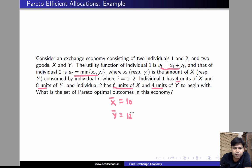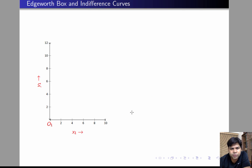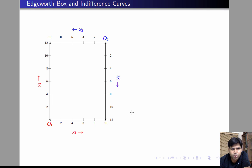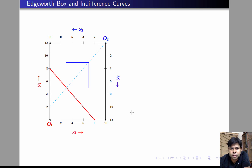Now let's find the set of all efficient allocations in this economy. We will begin by plotting the Edgeworth box. These are the axes of individual 1, and these are the axes of individual 2. Let's plot a couple of ICs, one for individual 1 and the other for individual 2. This is the indifference curve of individual 1 because its utility function is x1 plus y1. This is an indifference curve for individual 2 because individual 2's utility function is minimum x2, y2.